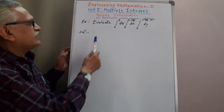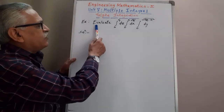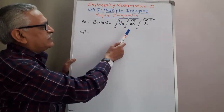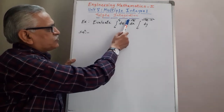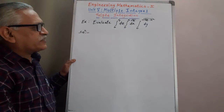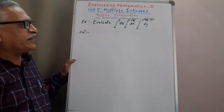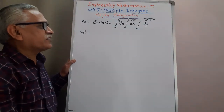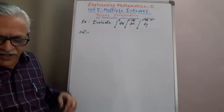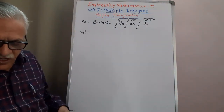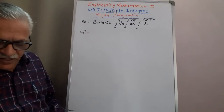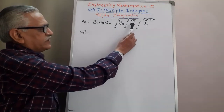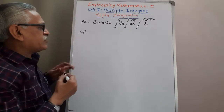Let us see the example. Evaluate the integral from 0 to 4 with respect to Z, integral from 0 to 2 root Z with respect to X, and integral from 0 to root of (4Z minus X squared) with respect to Y. The order of integration is: first with respect to Y, then with respect to X, and then with respect to Z.